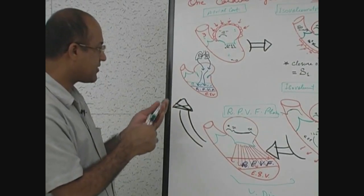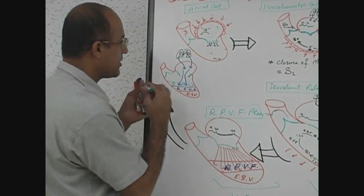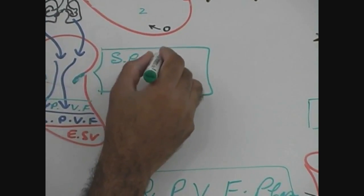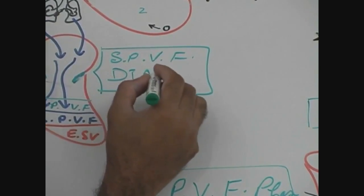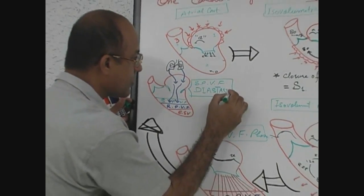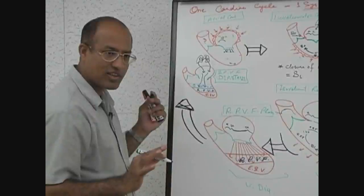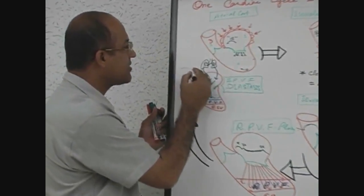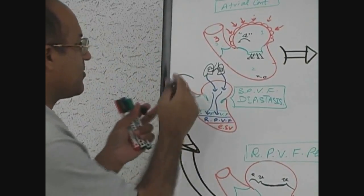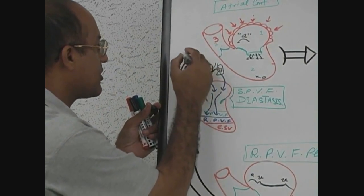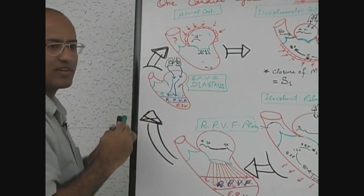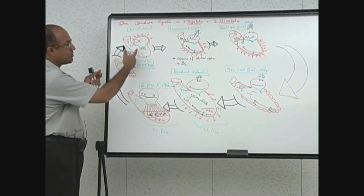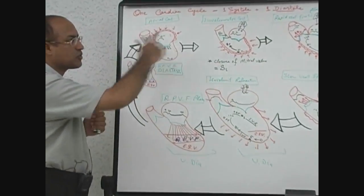The atrium is just acting as a conduit, so we call this slow passive ventricular filling. This is the longest phase of diastole and is also called diastasis. Just after diastasis, when the SA node fires again, atrial contraction begins — which is the last phase of ventricular filling. This last phase of ventricular filling is active, because the atrium is contracting.